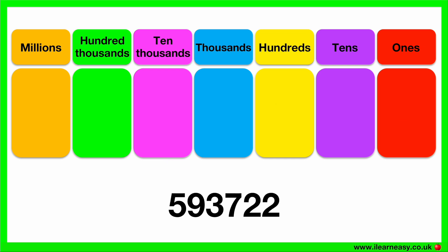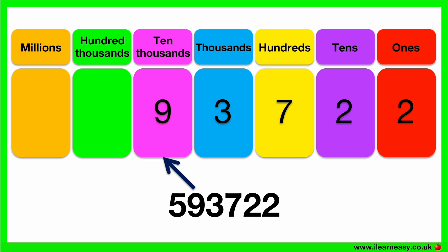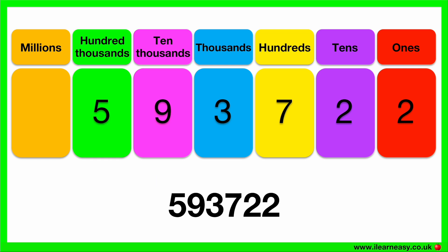Let's try another example. Here we have a six-digit number. Again, we need to separate out the different numbers according to their place values. The number 2 goes in the ones group, the number 2 goes in the tens group, the number 7 goes in the hundreds group, the number 3 goes in the thousands group, the number 9 goes in the ten thousands group, and the number 5 goes in the hundred thousands group. So this number is 593,722.